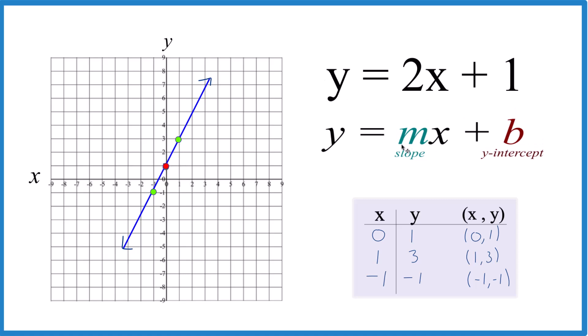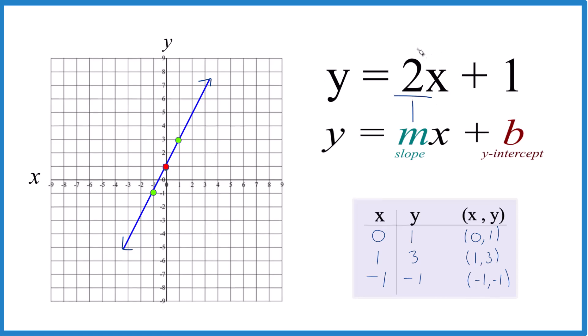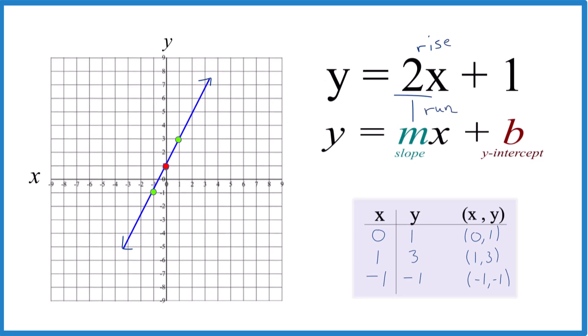And for the slope of 2, let's just call that 2 over 1, because then we can call this rise over run. We go to our y-intercept, we rise 1, 2, we run 1 right there. Rise 1, 2, run 1. And we can keep going.